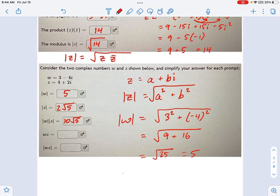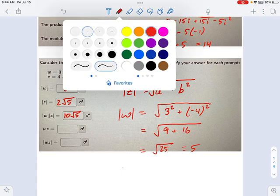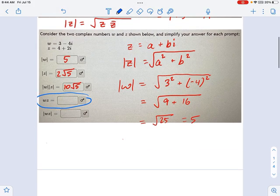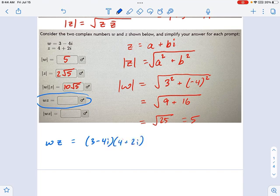Now, w times z, this is going to be complex right here. Let me emphasize what I'm working on right now. This one right here is going to be a complex number times a complex number, which is 3 minus 4i times 4 plus 2i. And there's no way around it. You're just going to have to foil this out. But it's not that bad.